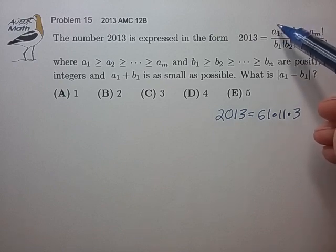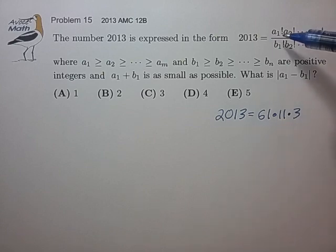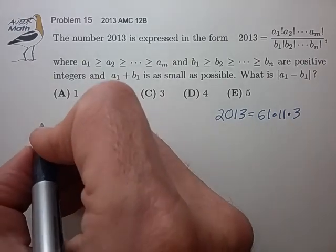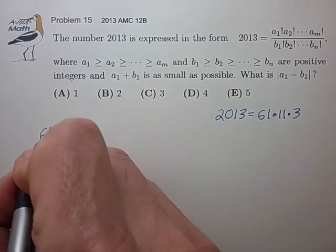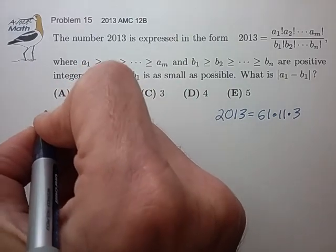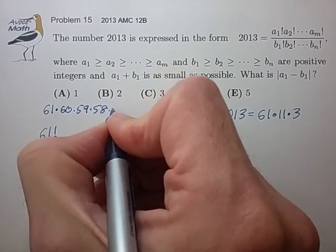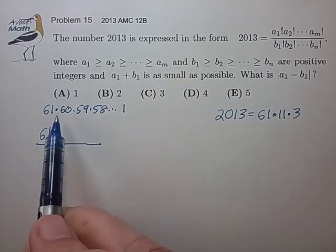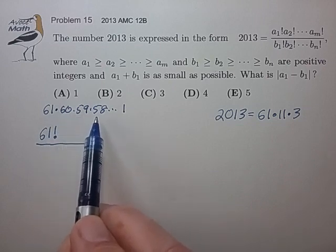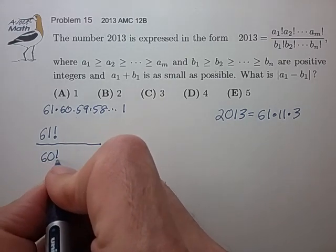Let's concentrate on A1 first. It looks like we're going to have to introduce the factor of 61 through the A1 factorial, and probably the simplest and the smallest way to do that is to just let A1 equal 61, in which case we'll have 61 factorial in the numerator, but that introduces a lot of unneeded factors. 61 factorial is 61 times 60, 59, 58, down to 1. So we have these factors of 60, 59, and 58 that are unneeded.